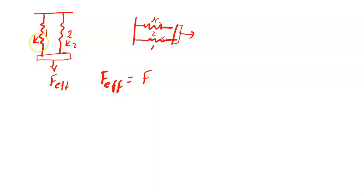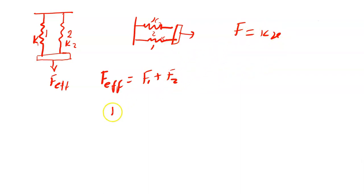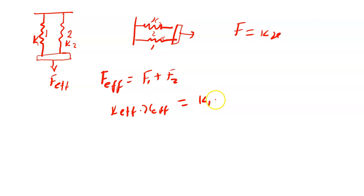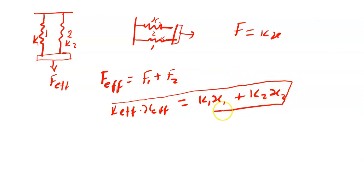The effective force for the parallel arrangement is going to be the force in spring 1 plus the force in spring 2. From the restoring force, we know that the magnitude is just kx. So the effective spring constant multiplied by the effective extension equals spring constant 1 multiplied by extension 1, plus spring constant 2 multiplied by extension 2.